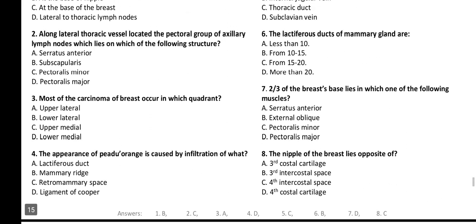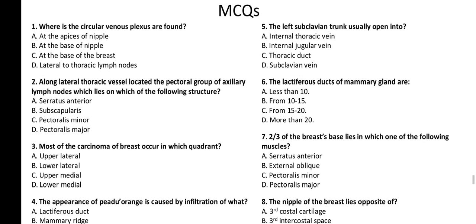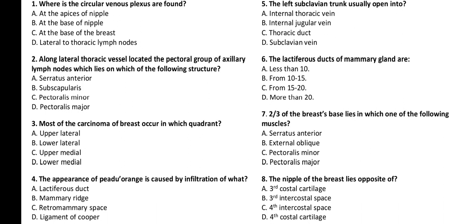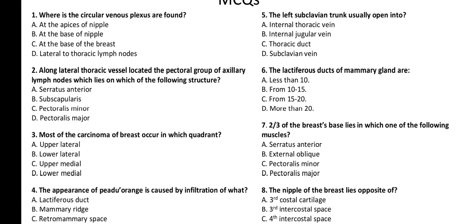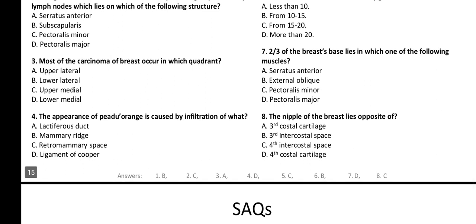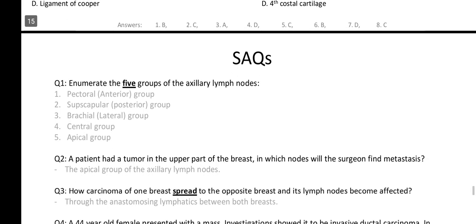Number three: A — upper lateral quadrant. I got it! Number four: D — ligament of Cooper. Got it! Number five: C — the subclavian trunk opens into the thoracic duct. Number six: C — fifteen to twenty lobes, two-thirds of the breast lie on the deep pectoralis major. Number seven: The nipple lies opposite the fourth intercostal space. Got them all!